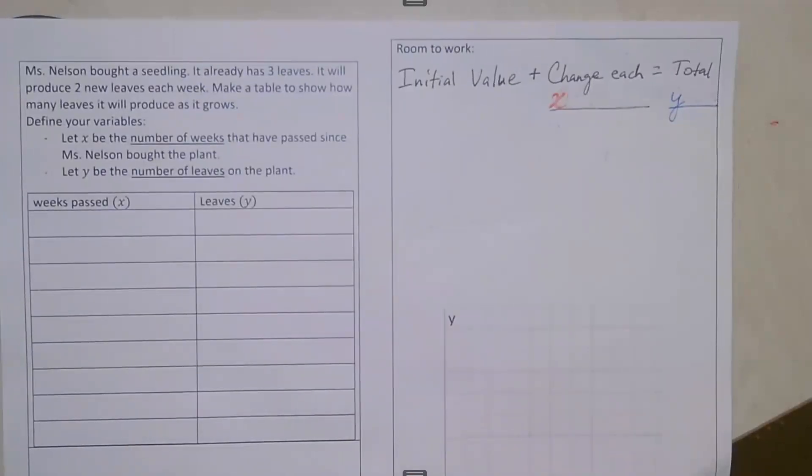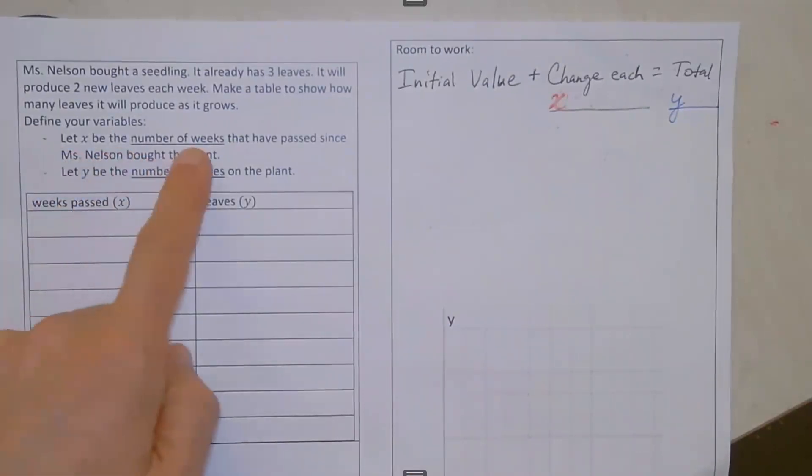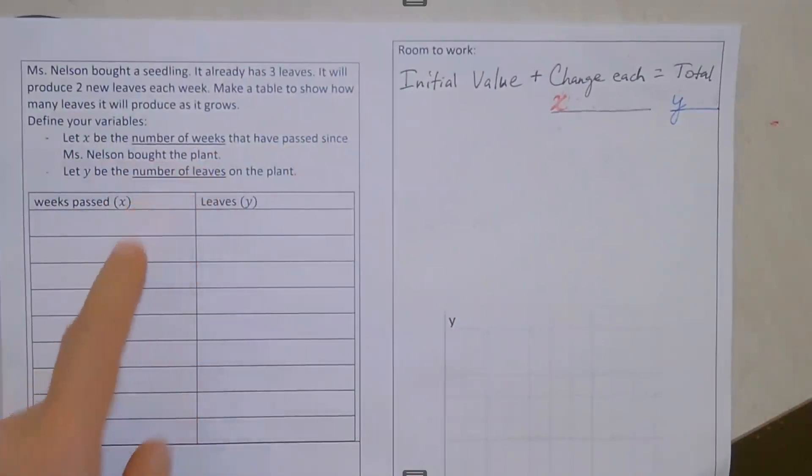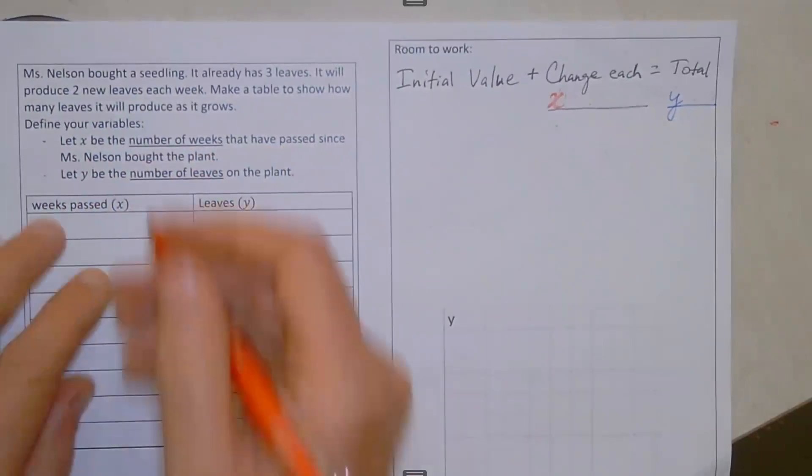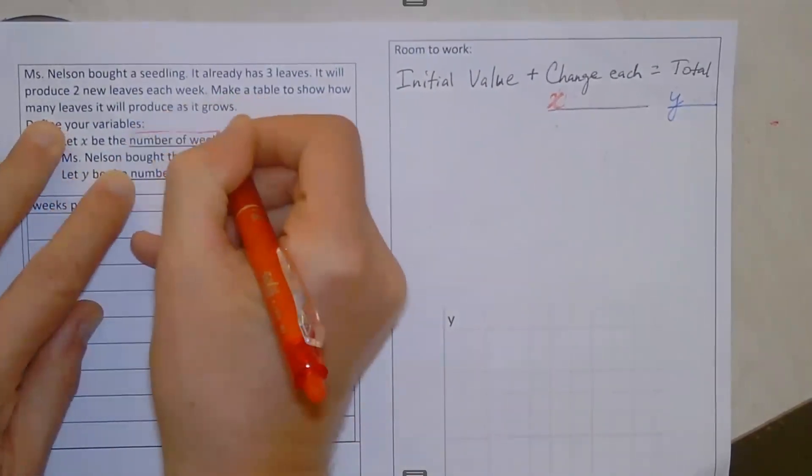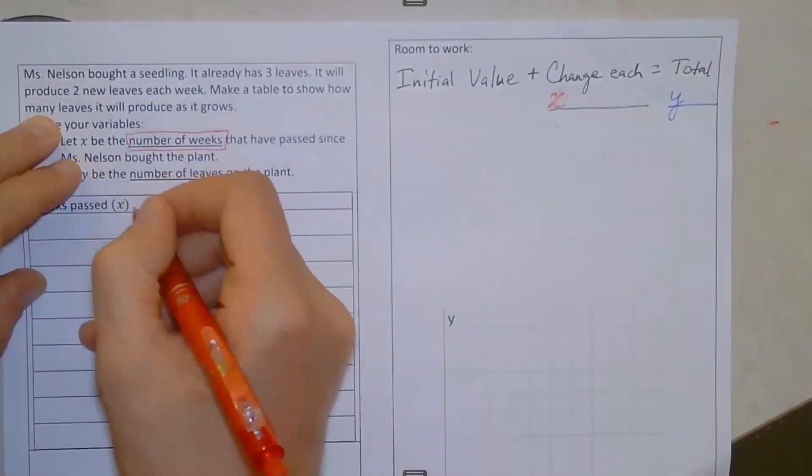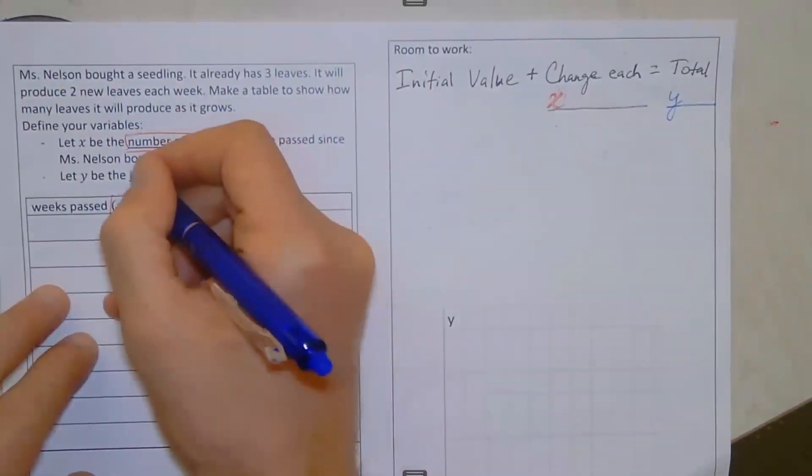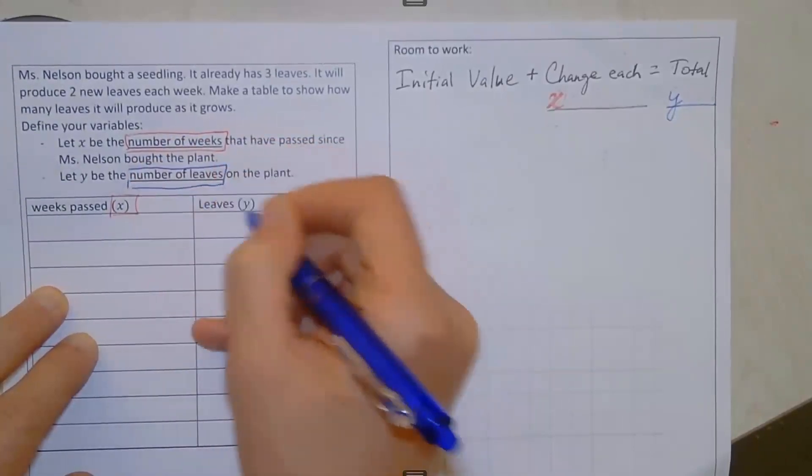Start by defining your variables. Let X be the number of weeks that have passed since Ms. Nelson bought the plant. And let Y equal the number of leaves on the plant. Weeks, that's our X value. And our number of leaves is our Y value.